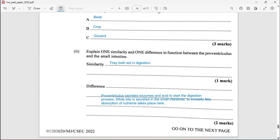Difference: the proventriculus secretes enzymes and acids to start the digestion process, while bile is secreted by the small intestine to emulsify fats. And of course it is also responsible for the absorption of nutrients.